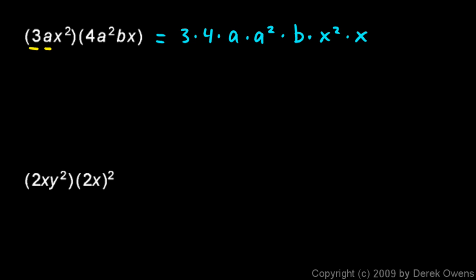The point is, each of the little pieces over here, the 3, the a, the x squared, the 4, the a squared, the b, and the x all have to show up here. And over here, they're arranged in a way that's a little bit convenient. I can easily see that the 3 times 4 is going to give me a 12, and the a times a squared will give me an a cubed. And then I have this b right here, all by himself.